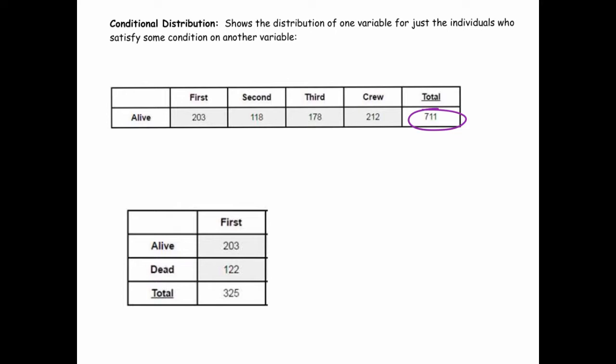What we would say is that this is the distribution of class. The top row is the values of the variable class, and we're looking at the distribution of class contingent on surviving. So given that you survived, this picture will tell us the breakdown of people within the classes for first, second, third, and crew. A conditional distribution shows the distribution of one variable for just the individuals who satisfy some condition on another variable. We're looking at the distribution of class for just the individuals who survived.